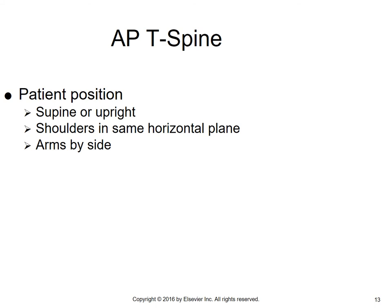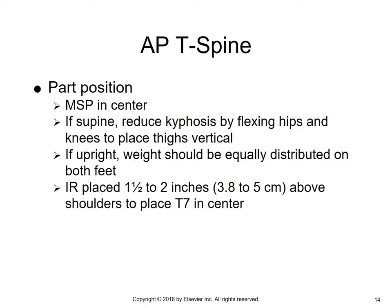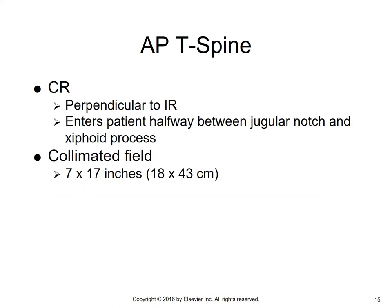For the AP T-spine, the patient position can be supine or upright. Shoulders are in the same horizontal plane, arms by the patient's side, MSP centered. If supine with kyphosis, reduce it by flexing the hips and knees to place the thighs vertical. If upright, weight should be equally distributed on both feet. The IR is placed one and a half to two inches above the shoulders to center T7. The central ray is perpendicular, entering halfway between the jugular notch and the xiphoid process, using a narrow but long 7 by 17 inch collimated field.